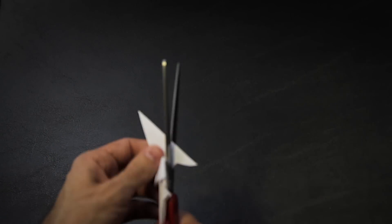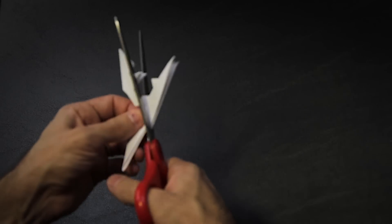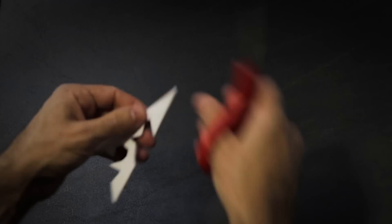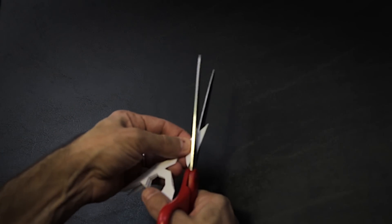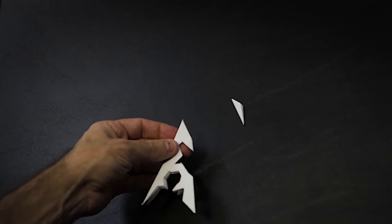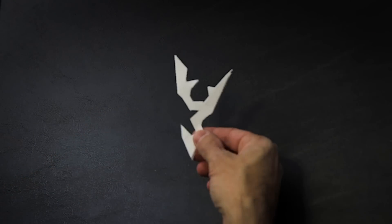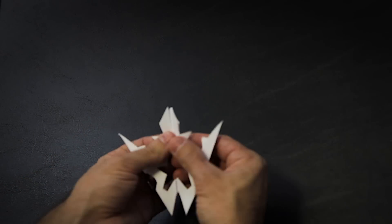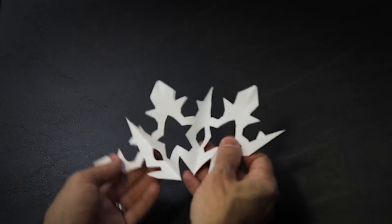Use your scissors to cut out shapes along each of the folded sides. Experiment with different shapes and angles and see what happens when you cut off the center point. When you are finished cutting, carefully unfold the paper to reveal your six-sided snowflake creation.